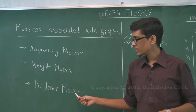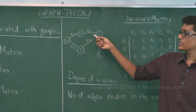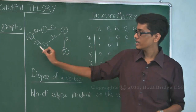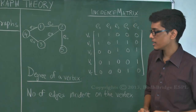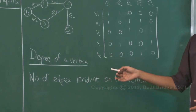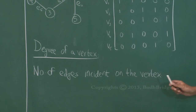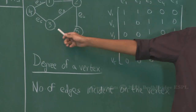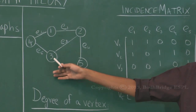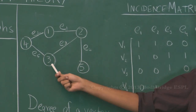Next we will see the third type: the incidence matrix. We attach labels to the edges in the example graph — E1, E2, E3, E4, and E5. Here we also see another definition: the degree of a vertex. The degree of a vertex V is defined as the number of edges incident on vertex V. For example, the number of edges that touch vertex 3 are 2 — E3 and E5 — so the degree of vertex 3 is 2.